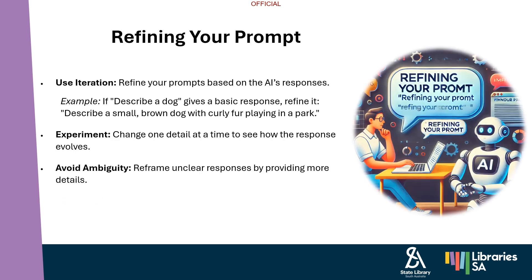Refining your prompt — there are three approaches listed here: use iteration, experiment, and avoid ambiguity. One of the best ways to refine prompts is through iteration. AI may give you a basic response at first, but you can tweak your prompt to get closer to what you envision. The key is to experiment and eliminate ambiguity.